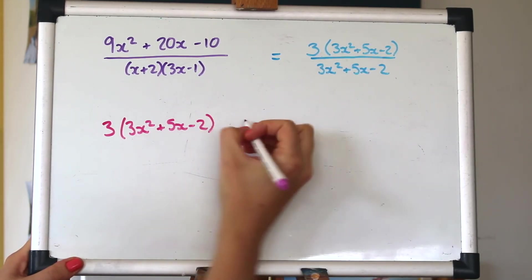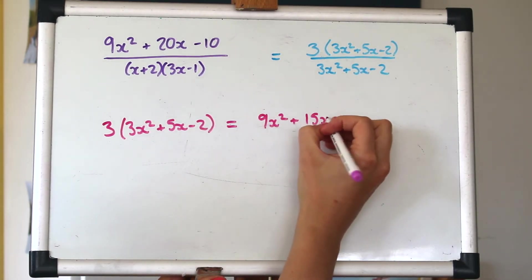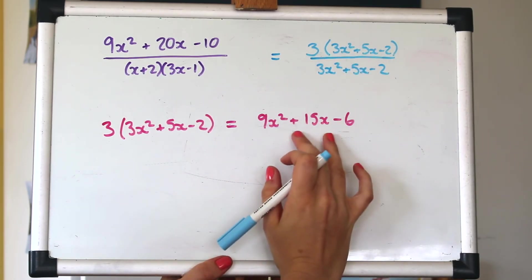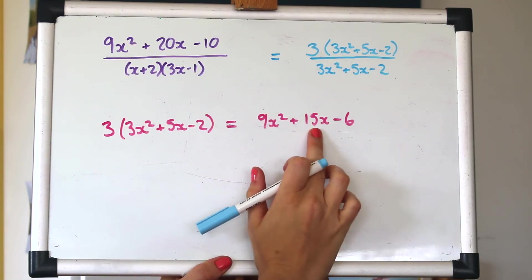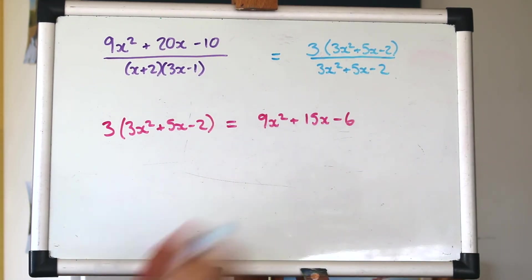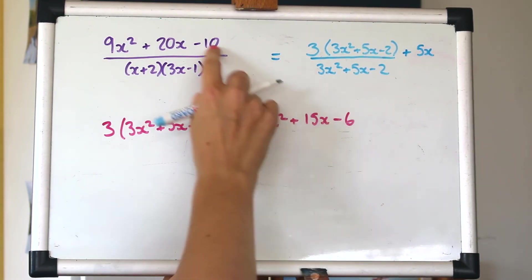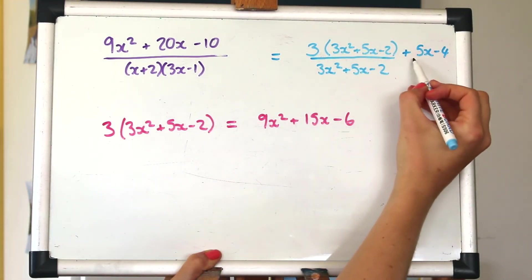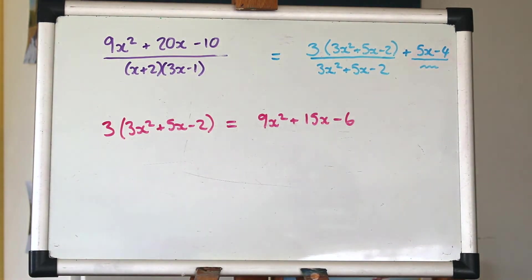So I'm just going to figure that out down here, multiplying that out. So this here is what we've got if we multiply that out. That's what we've got on the right hand side, but we want to have what we've got here. So we need to balance that out. We've got positive 15x, but we want positive 20x. So we need to add another 5x. We've got a minus 6, but we want a minus 10, so we need to take off another 4.